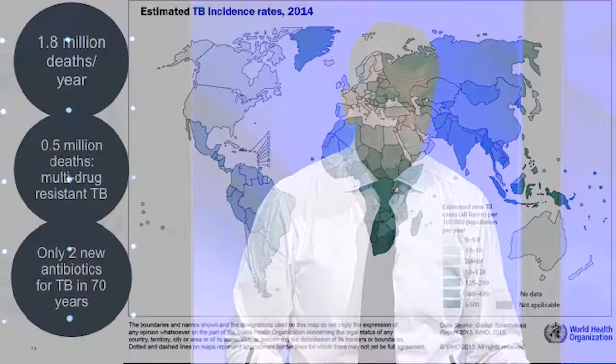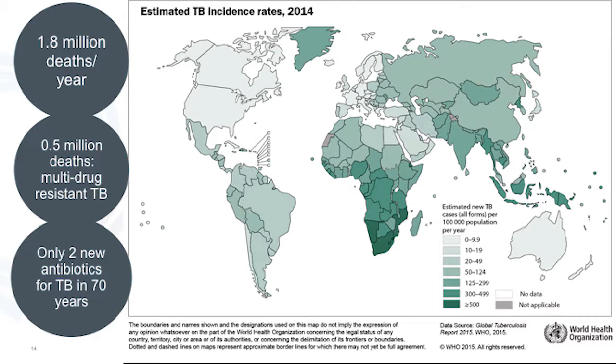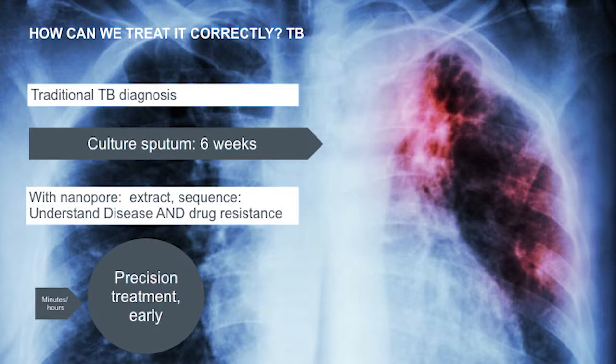TB drug resistance in India and China is at epidemic levels. Multi-drug resistant strains have emerged. Public Health England and the Wellcome Trust have partnered with clinicians in Mumbai. It takes six weeks to do a TB drug-resistant test today. With our device, they're down to three hours, but we think we can do it in 45 minutes — and most importantly, we think we can do it out in the field. If you can find a drug-resistant strain, you can contain it, and you change everything.